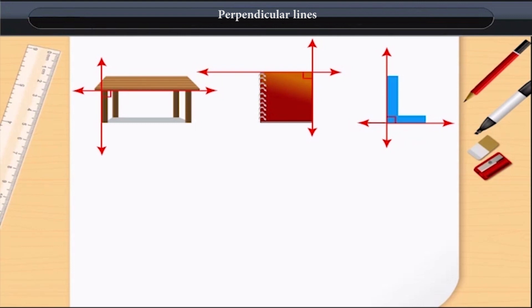Note that there is a 90 degree angle between two intersecting lines. All such two intersecting lines which make a 90 degree angle between them are called perpendicular lines.